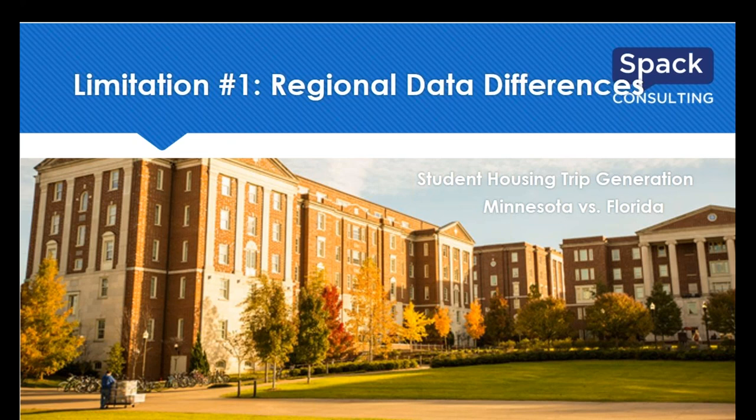We were surprised to find that trip generation for Florida university student housing was about three or four times what we had in Minnesota. Comparing against ITE numbers, ITE was kind of right in the middle. Daily trips per unit in Minnesota were about three, closer to thirteen in Florida, and closer to six for ITE — a very big variation that illustrates the regional differences problem.